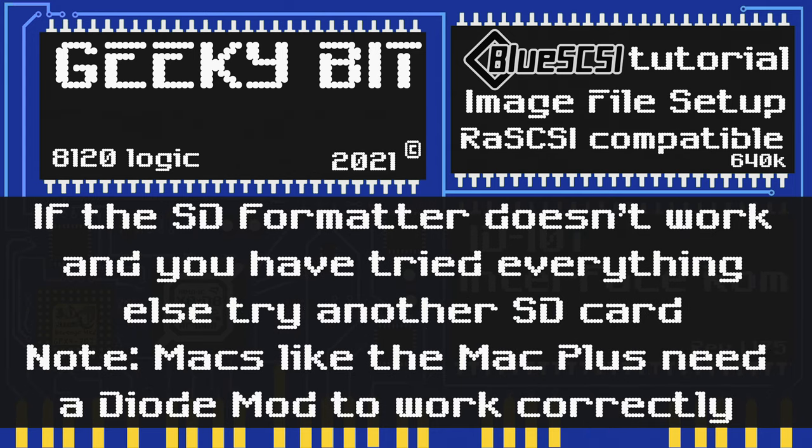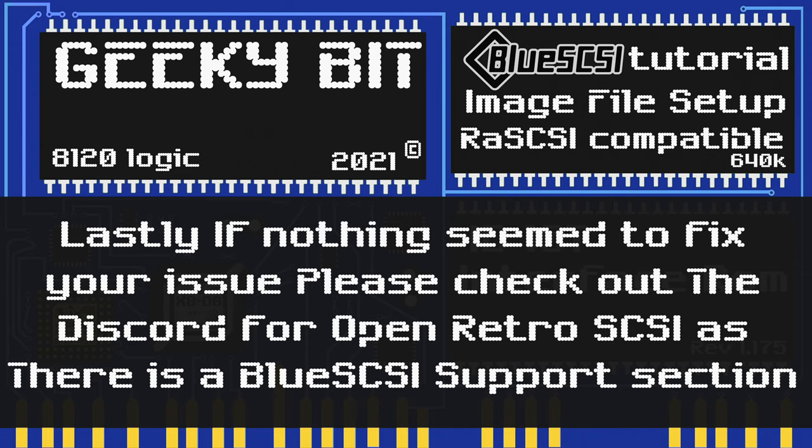After you use the SD Formatter tool, if it's still not working and you've tried everything else, you may want to try a different SD card — preferably another brand if you have one. Also note: if you have a Mac Plus, you may need to do a diode mod for it to work correctly. Lastly, if all else fails, you can always go check out the Discord for Open Retro SCSI as there is a BlueSCSI support section there, and a link to that Discord is in the description below.